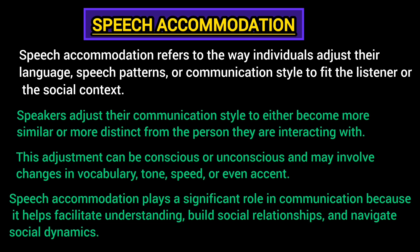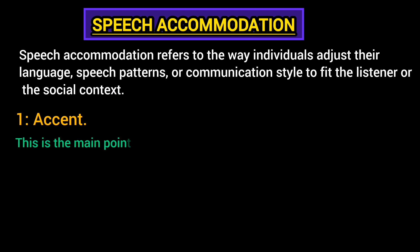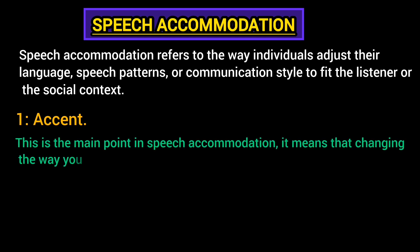The first characteristic is accent. This is a main point in speech accommodation — it means changing the way you pronounce words. For example, if you're speaking to someone with a British accent, you might start pronouncing words like they do without even realizing it. This can make the other person feel more connected to you. It involves changing one's accent to align with that of the listener, whether by adopting a regional dialect, softening one's native accent, or adopting a more neutral one.